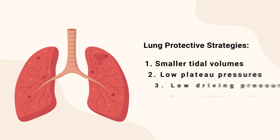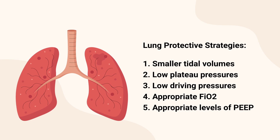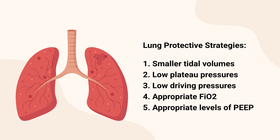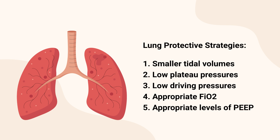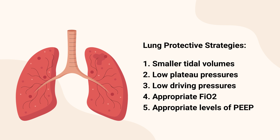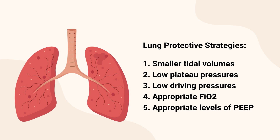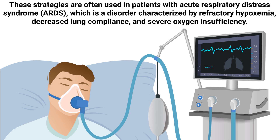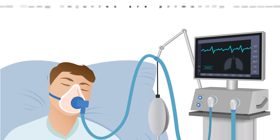A patient at risk of a ventilator-induced lung injury may benefit from lung protective strategies, such as smaller tidal volumes, low plateau pressures, low driving pressures, appropriate FiO2, and appropriate levels of PEEP. These strategies are often used in patients with acute respiratory distress syndrome, which is a disorder characterized by refractory hypoxemia, decreased lung compliance, and severe oxygen insufficiency.